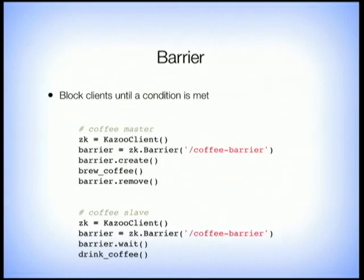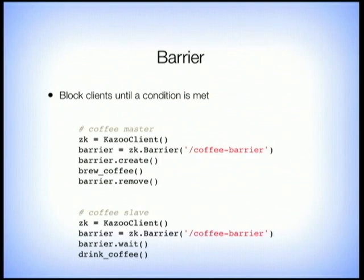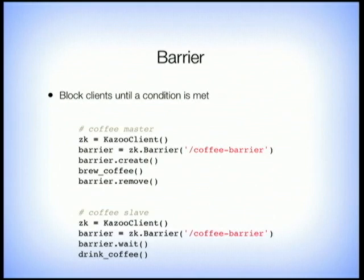Barrier is the last pattern — it has your clients block until a condition is met. A master process is going to brew some coffee using coffee-over-IP. It constructs a barrier at a well-known location, creates the barrier, and from then on anybody trying to get through is going to block. We wait while coffee brews, and once done, we remove the barrier. The slave processes all construct this barrier at the well-known location, then wait for it to either not be there or to go down so they can have their caffeine.